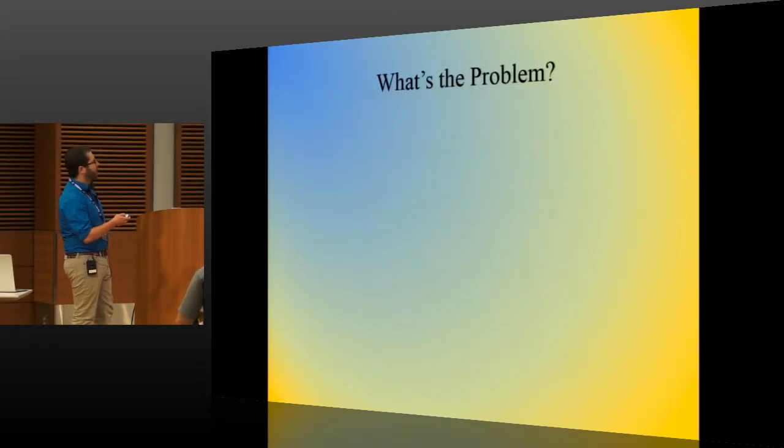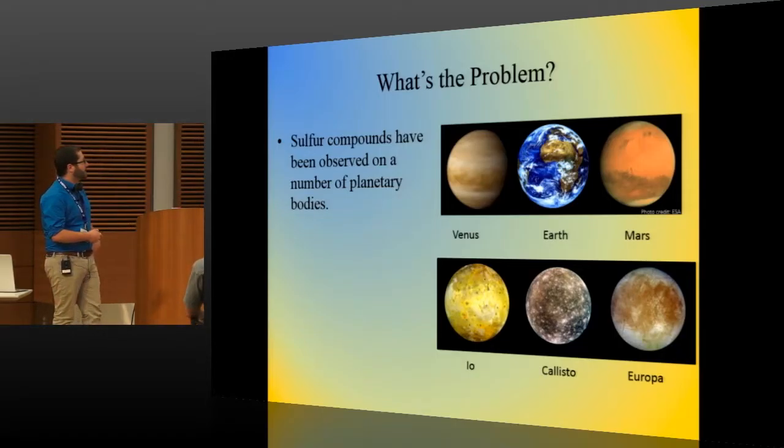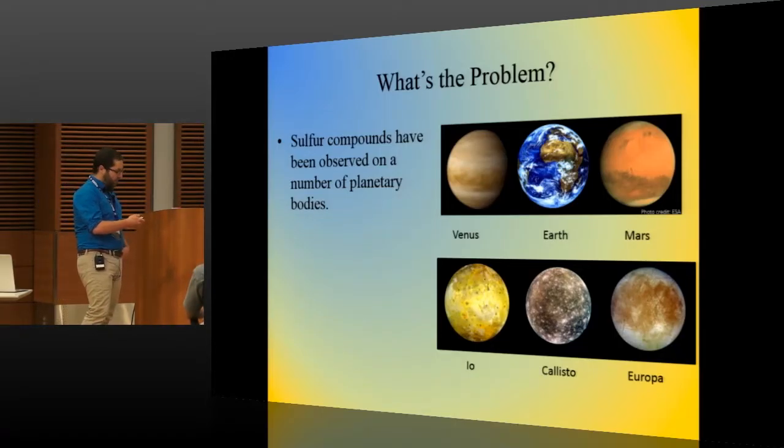So I guess really the question is, what's the problem? And the problem is, sulfur compounds have been observed throughout our solar system, not just on Earth. And particularly, they're on Venus.